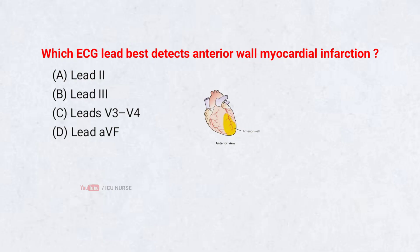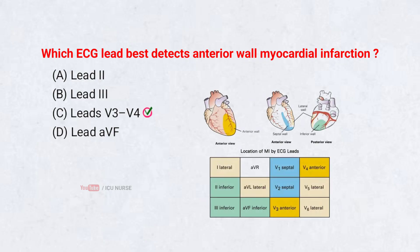Which ECG lead best detects anterior wall myocardial infarction? A. Lead 2, B. Lead 3, C. Lead V3, V4, D. Lead AVF. Anterior wall myocardial infarction affects the front part of the left ventricle, and ST elevation is best seen in the precordial chest leads V3 and V4.